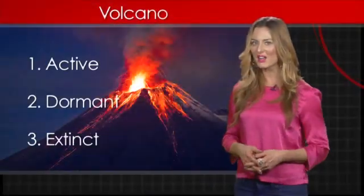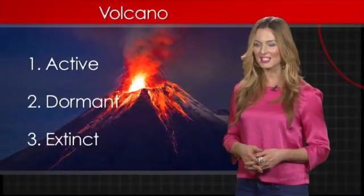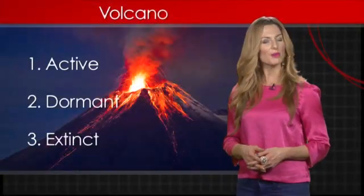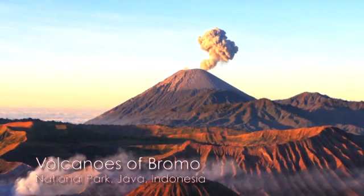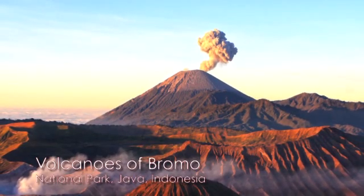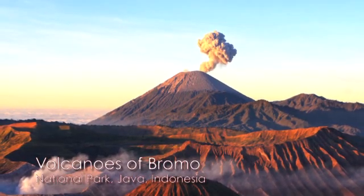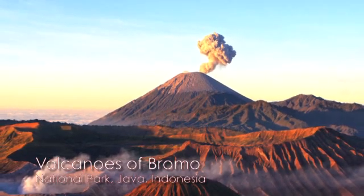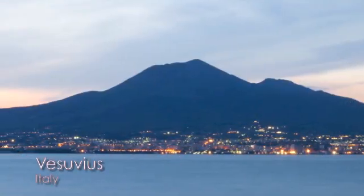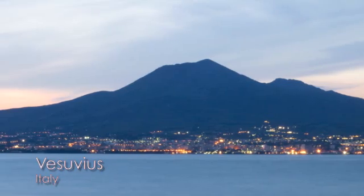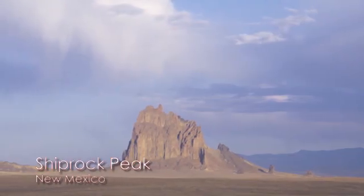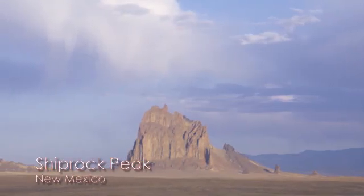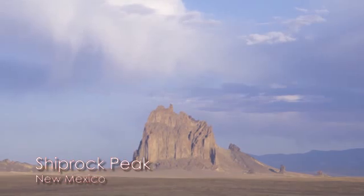Seismologists classify volcanoes as active, dormant, and extinct. Active volcanoes are either erupting or likely to erupt in the future. Dormant volcanoes have not erupted in recent history. Extinct volcanoes have exhibited no activity for long periods and are unlikely to erupt in the future.